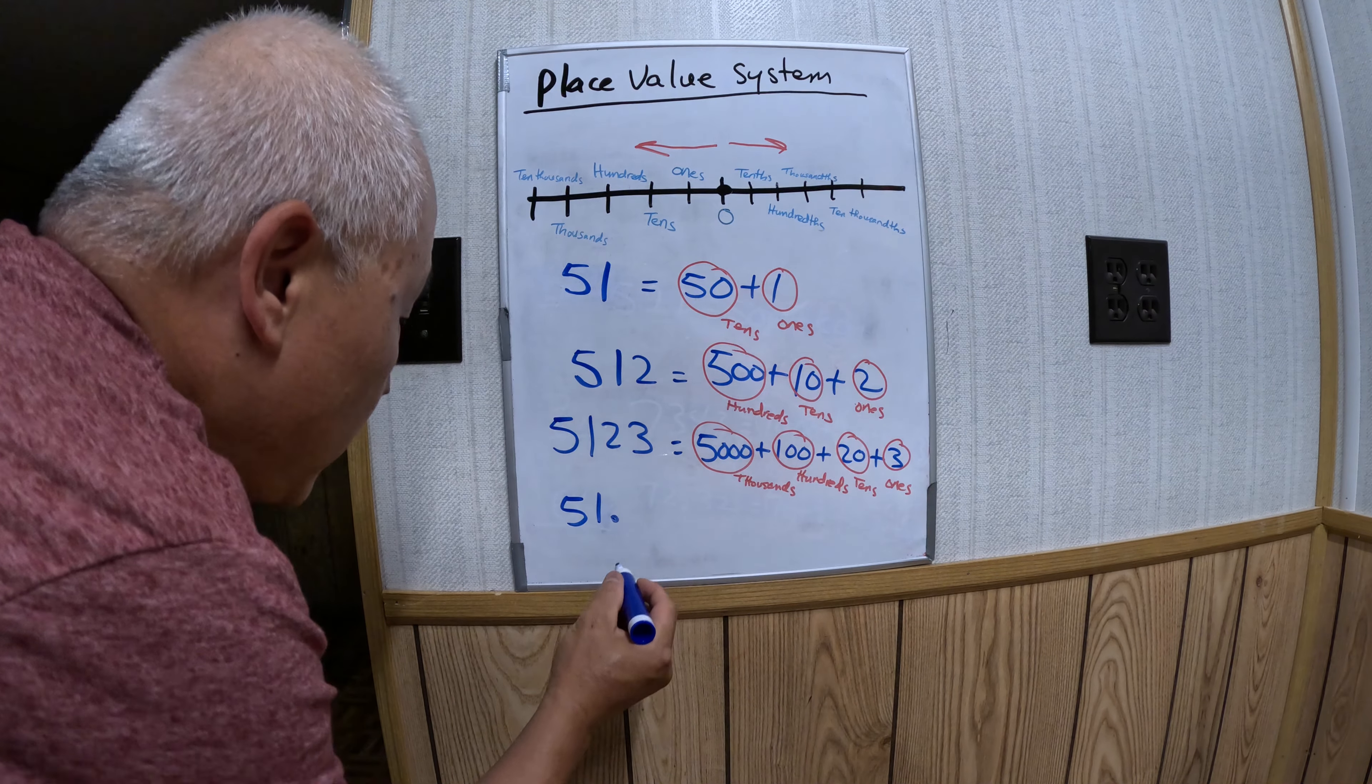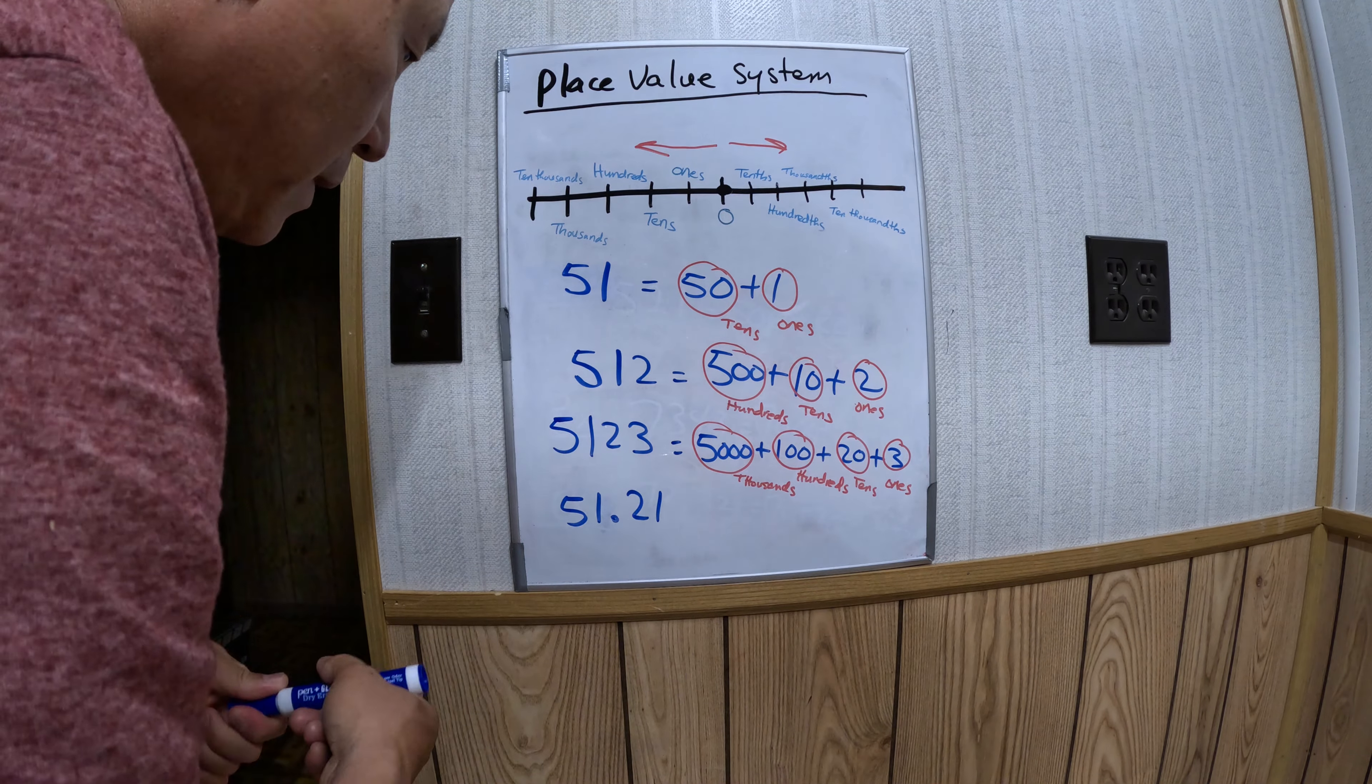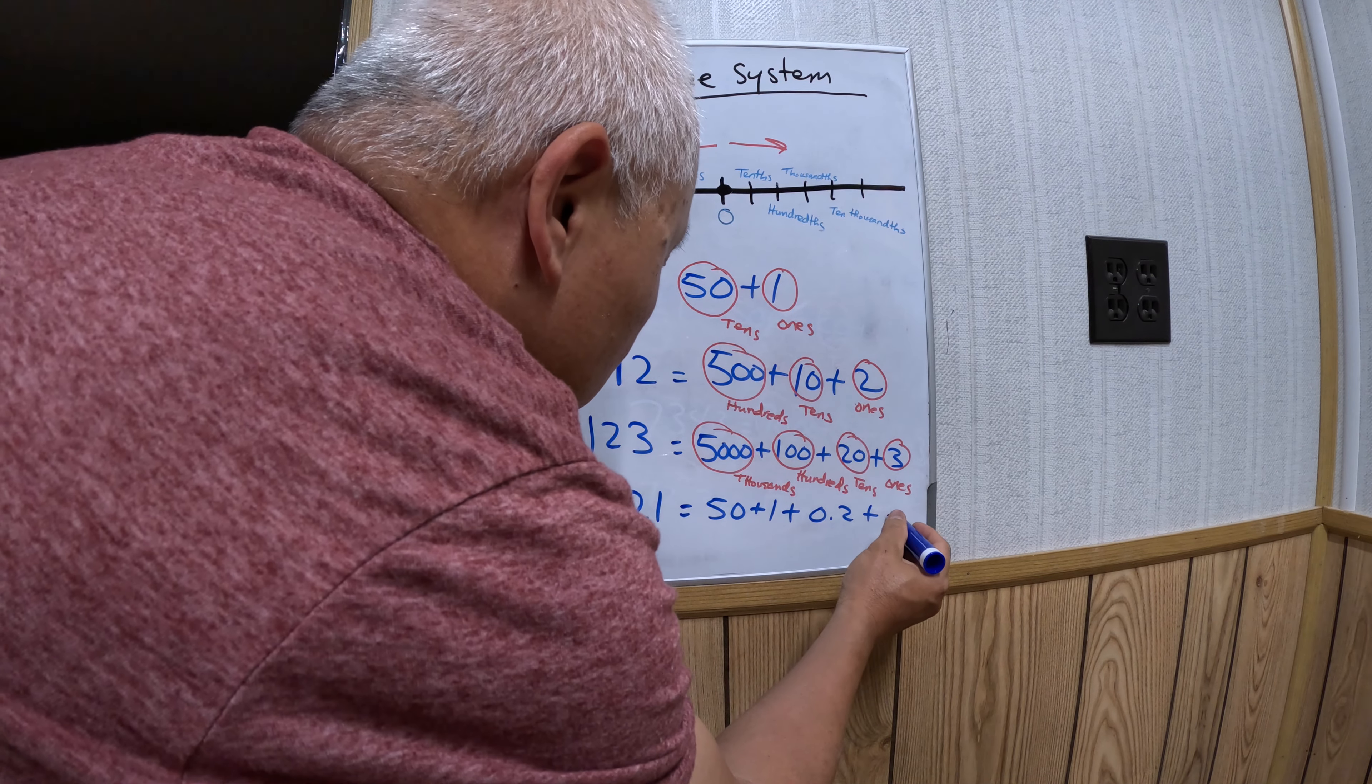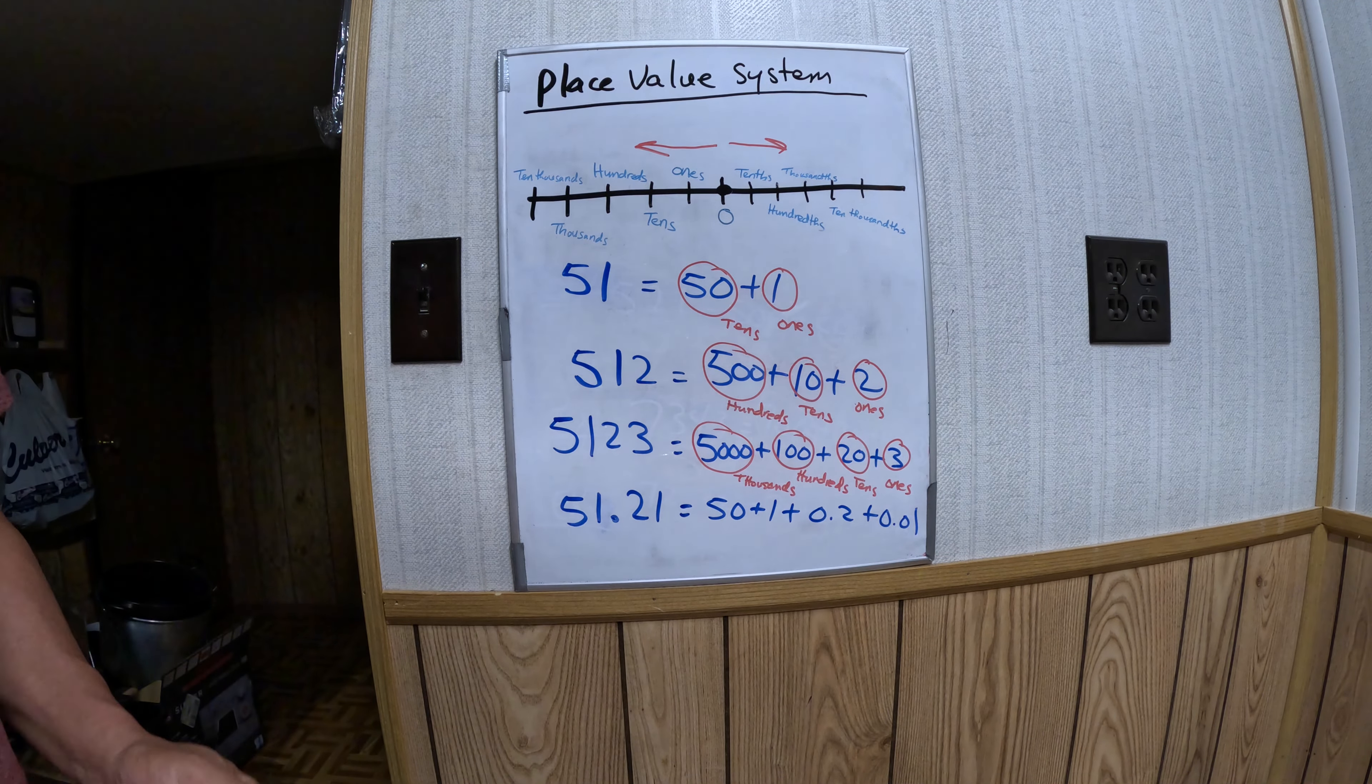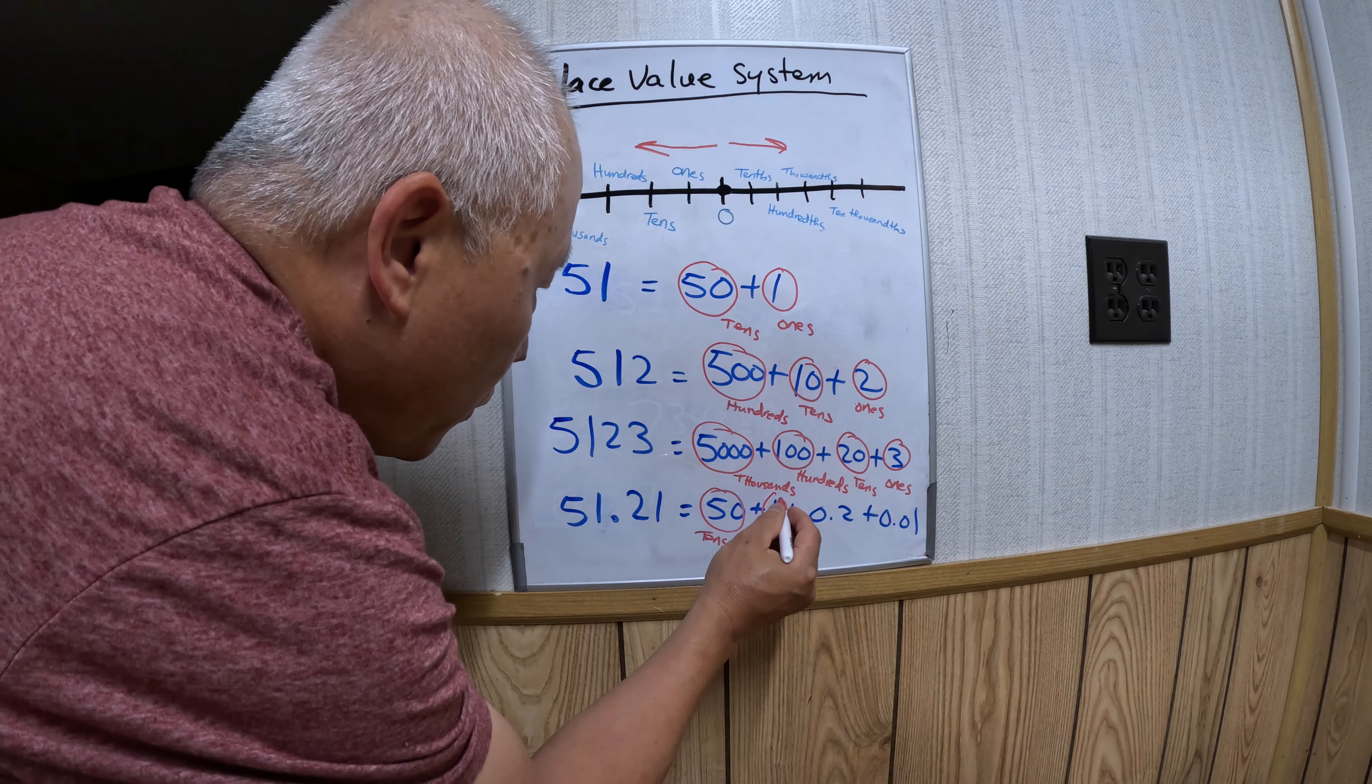Let's say you have $51.21. This means 50 plus 1 plus 0.20 plus 0.01. One cent is 0.01. We have the tens place, the ones place, the tenths place (0.2), and hundredths place (0.01).